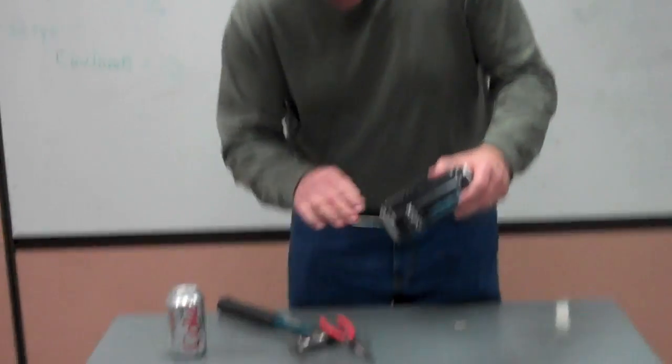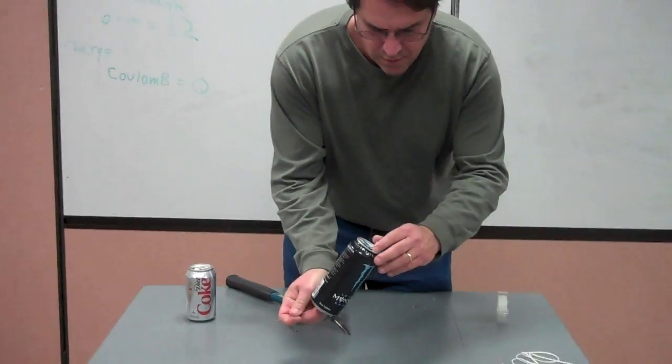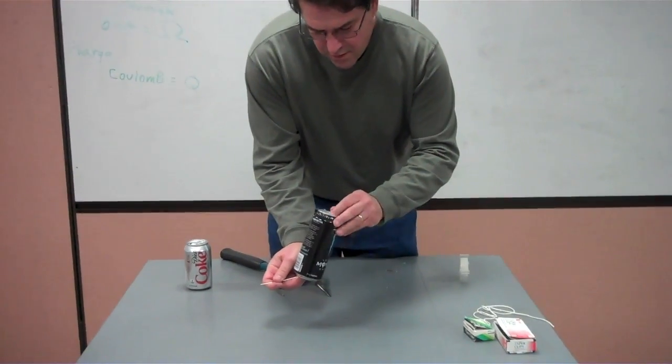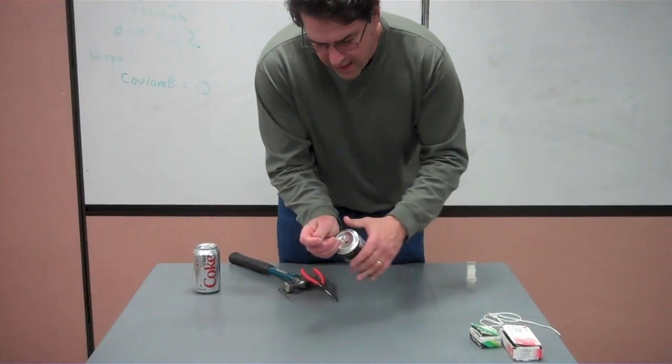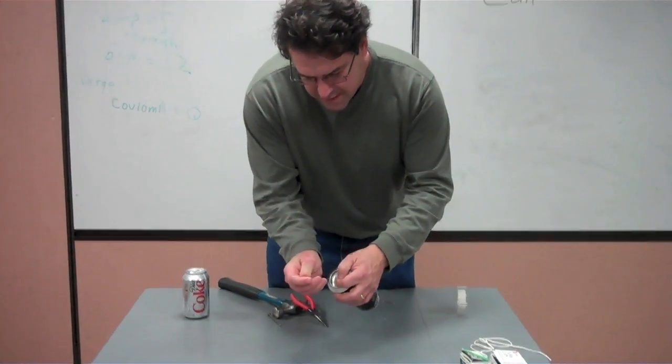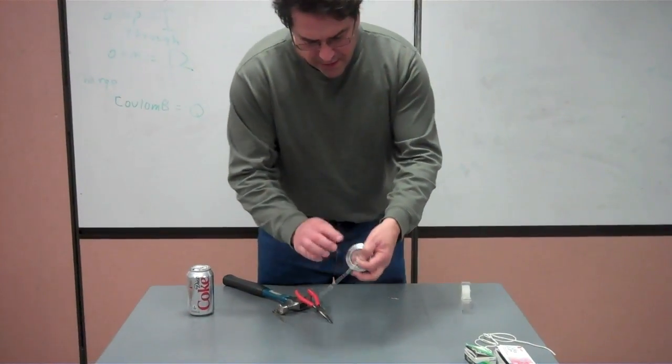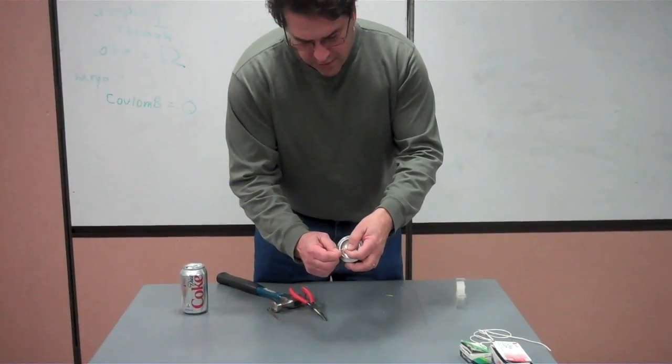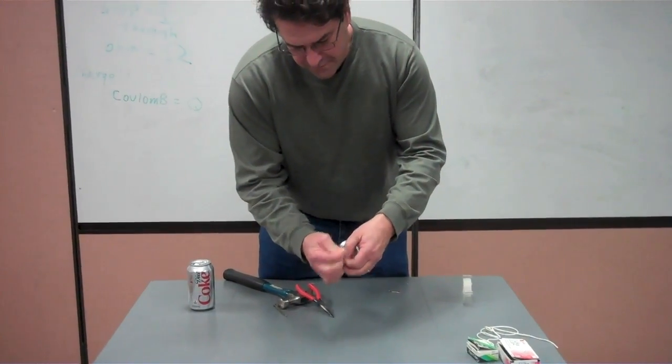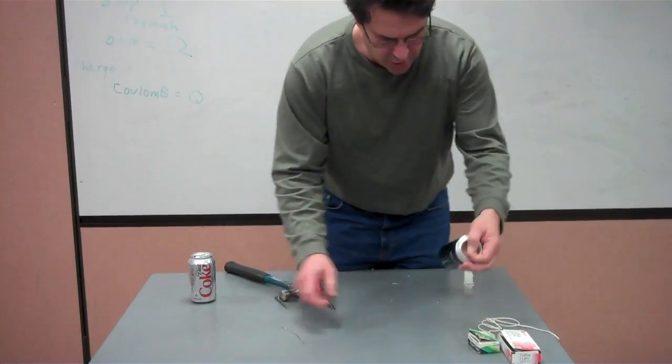Once you hook it, you pull the rubber band through, getting the weights right inside. Try to get them in the middle of the can if you can. Once you have the rubber band on the other side, unhook your hook.